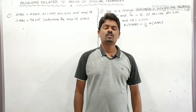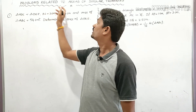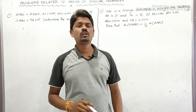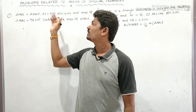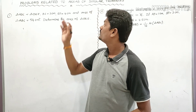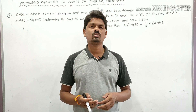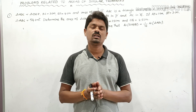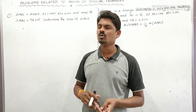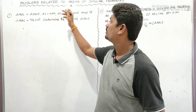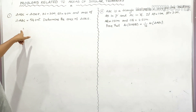Hello students, welcome to Learn More Math. Today we are going to learn about similar triangles, part 9 — problems related to areas of similar triangles. If you watched part 8, then only you can understand these problems very easily. In part 8 we discussed four types of statements related to the areas of similar triangles, and now we have to do some problems related to that.